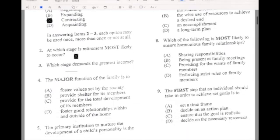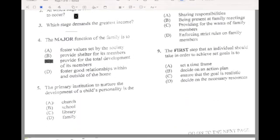The major function of the family is to, and if your answer is C, provide the total development of its member, then you are correct. Let's go to number five. The primary institution to nurture the development of a child's responsibility and personality is, and if your answer is D, then you are correct, family.